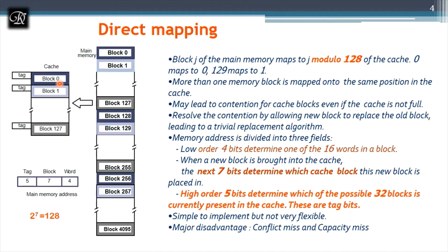Out of the 16-bit address, the word size of 16 words requires 4 bits, which remains constant. Of the remaining 12 bits, 7 bits are used to recognize each word line (block) in the cache, since 2^7 = 128.